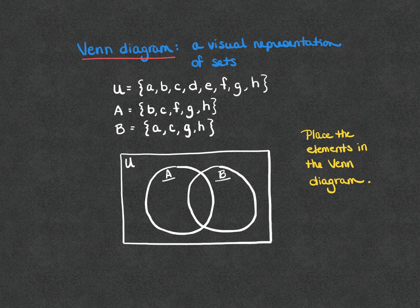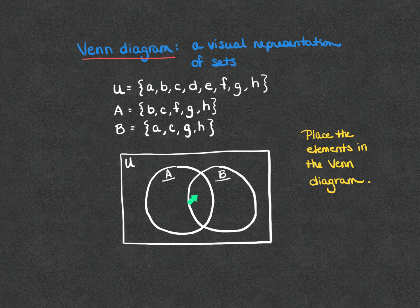We're going to go through each one of the elements in the universal set and figure out where it belongs. Does it belong outside? Does it belong in set A and set A only? Does it belong in the intersection of A and B? Or does it belong in set B only? So let's start with element A.